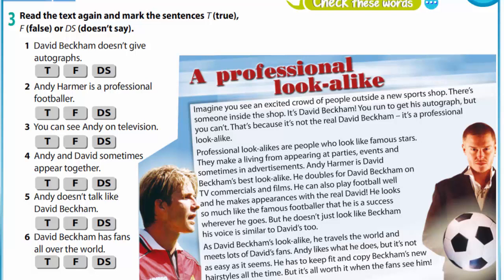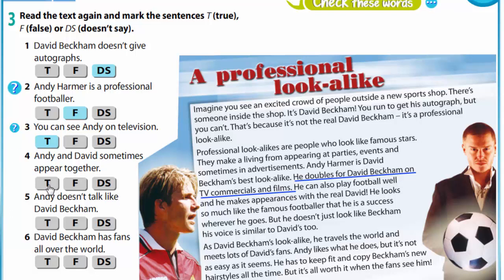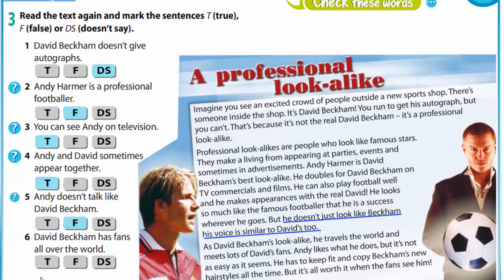In exercise 3 you are to read the text again and mark the sentences as true, false, or doesn't say. 'David Beckham doesn't give autographs' — there is no information in the text, so we put doesn't say. 'Andy Harmer is a professional footballer' — false, because it is said that he is the best lookalike. 'You can see Andy on television' — true, because he doubles for David Beckham on TV commercials and films. 'Andy and David sometimes appear together' — true, as he makes appearances with the real David. 'He doesn't talk like David Beckham' — false, because his voice is similar to David's. 'David Beckham has fans all over the world' — true, because Andy travels the world and meets lots of David's fans.